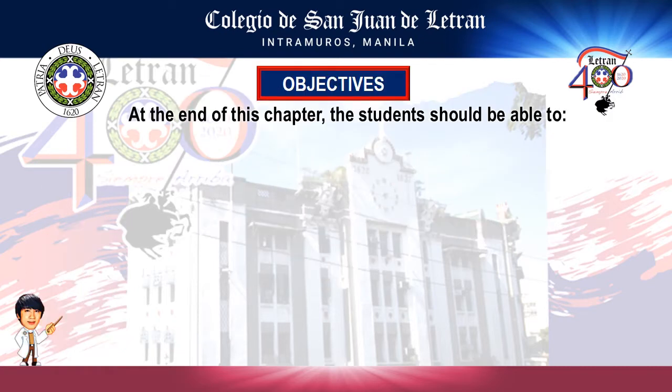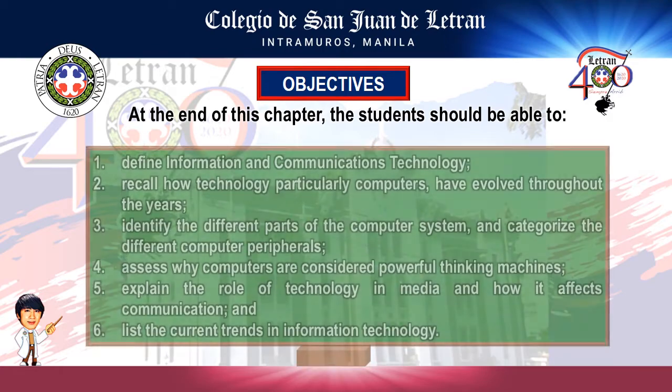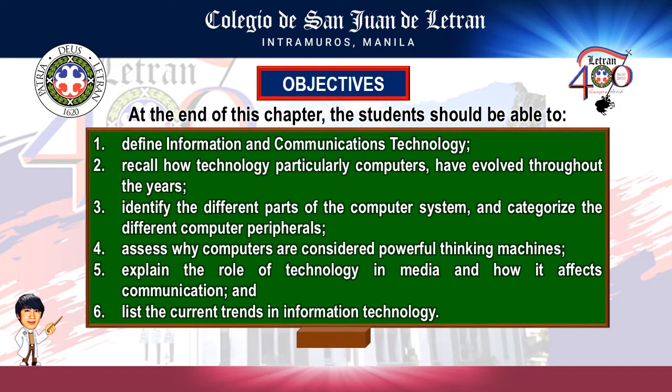So what are the learning outcomes for this chapter? One is to define information and communications technology. Two, recall how technology, particularly computers, have evolved throughout the years. Three, identify the different parts of the computer system and categorize the different computer peripherals. Four, assess why computers are considered powerful thinking machines. Five, explain the role of technology in media and how it affects communication. And lastly, list the current trends in information technology.